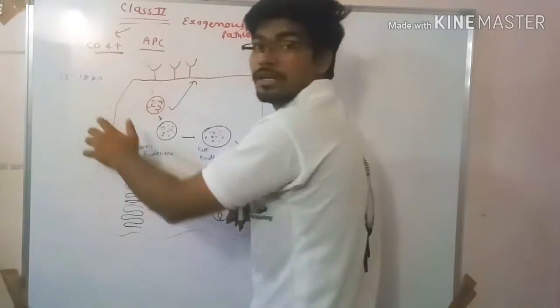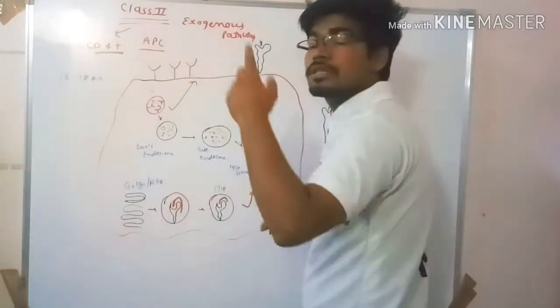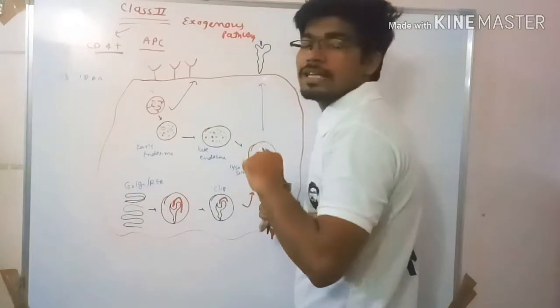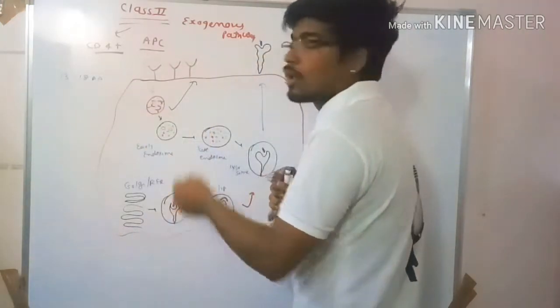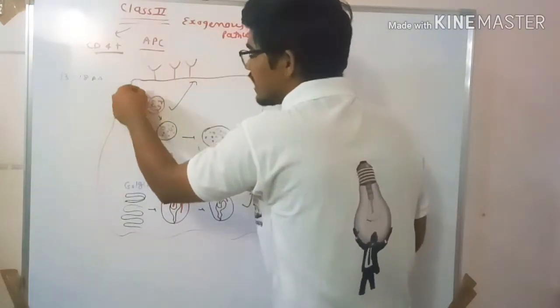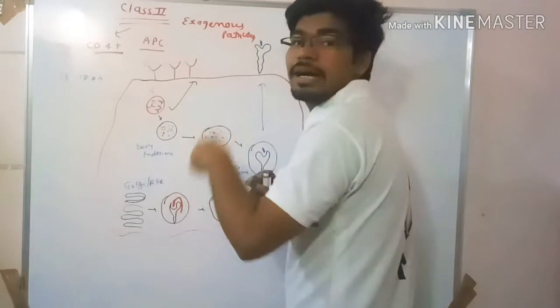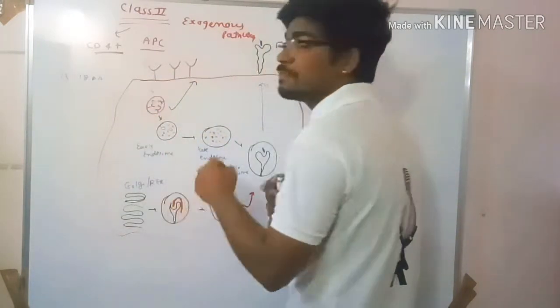It can present 13 to 18 amino acid peptides and happens outside the golgi in endosomes. First, the antigen binds with the outer receptor of the APC, which is like an antibody receptor. It then binds and gets internalized by receptor-mediated endocytosis, after which it goes to the endosome.